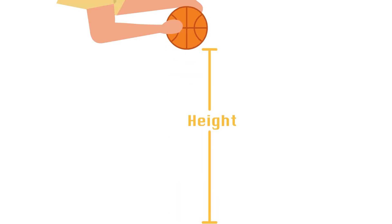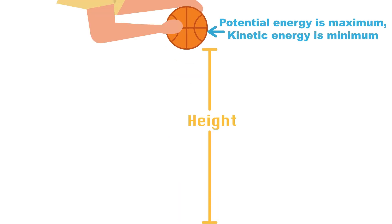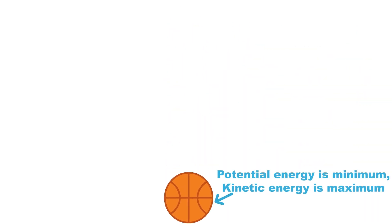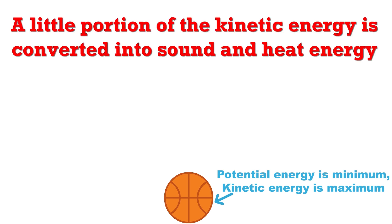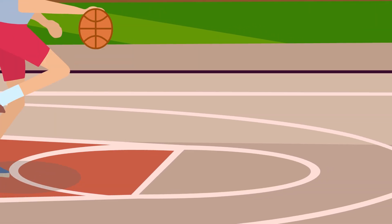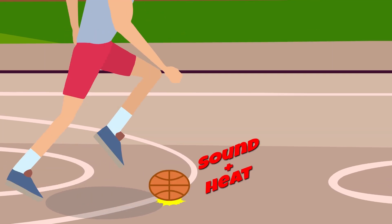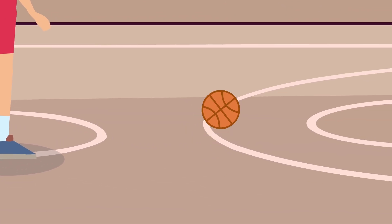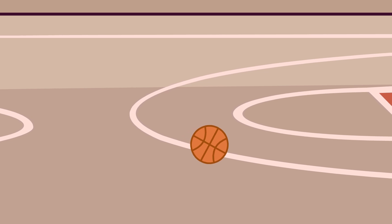When the ball is held at a certain height above the ground, it has potential energy, but as it's dropped, that potential energy is converted into kinetic energy. Just before the ball touches the floor, it still has kinetic energy. But the moment the ball touches the floor, a fraction of its kinetic energy is lost in the form of sound or heat. This is why the ball makes a sound and also gets heated ever so slightly when it's bounced on a hard surface. This is also why the ball loses some of its height with every subsequent bounce.